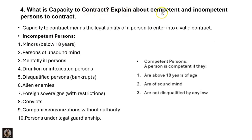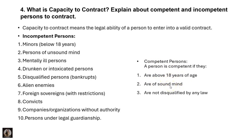The next question: what is capacity to contract? Capacity to contract means the legal ability of a person to enter into a valid contract. Incompetent persons include minors below 18 years, persons of unsound mind, mentally ill persons, intoxicated persons, disqualified persons, alien enemies, foreign nationals with restrictions, convicts, companies or organizations without authority, and persons under legal guardianship. Competent persons are those above 18 years, of sound mind, and not disqualified by any law.